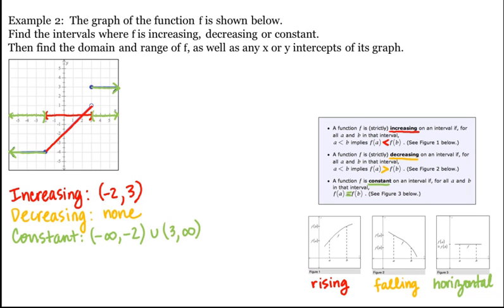Notice that in both of these examples, we've been writing these intervals as open intervals. The terms increasing, decreasing, and constant are defined in terms of intervals — not point-wise, but in terms of intervals. So we could have included any of these endpoints and our answer would be correct, but by convention, most authors state these intervals as open intervals.